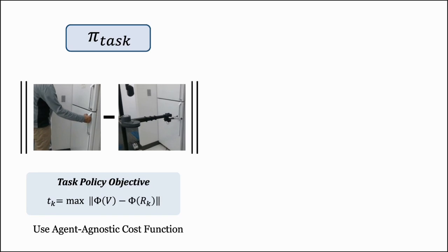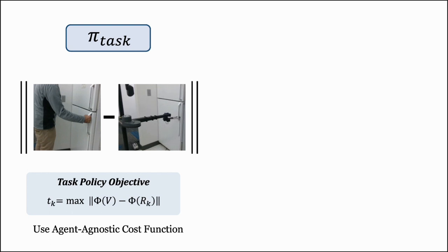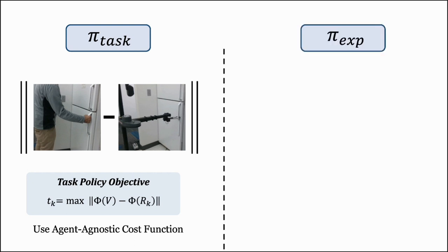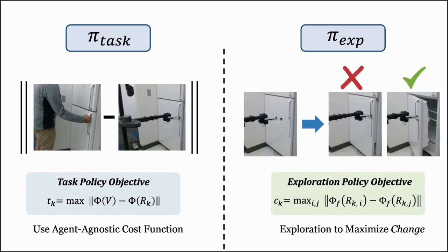The policy works with two different sub-modules. Firstly, the task policy optimizes the agent-agnostic distance between human and robot videos, as shown in the blue box. However, in order to not be too close to the prior, we encourage the robot to discover new things using an exploration policy. This policy's goal is to maximize agent-agnostic change. The objective is to maximize visual change in the agent-agnostic embedding space.